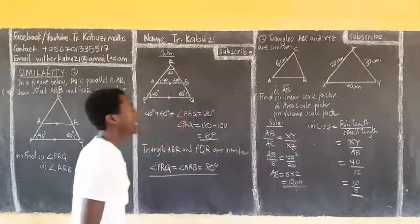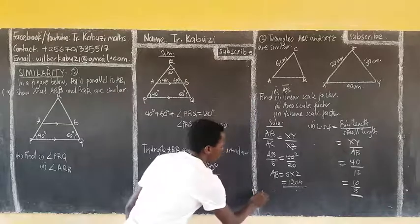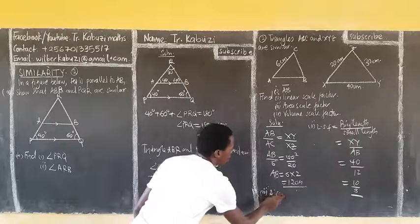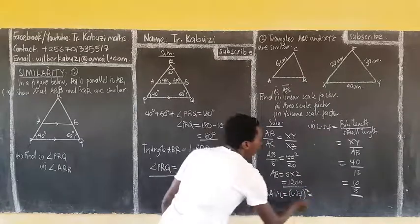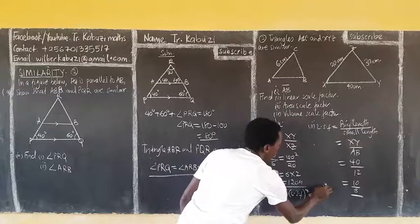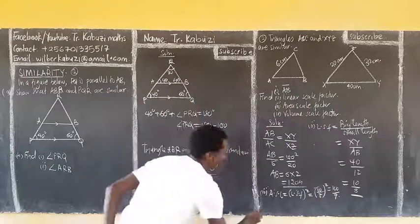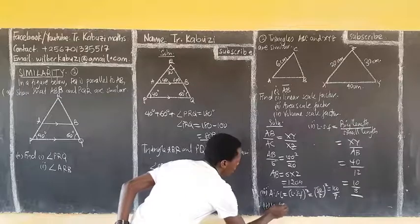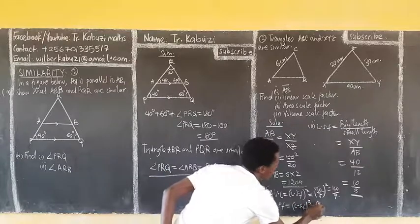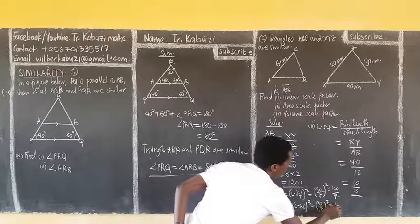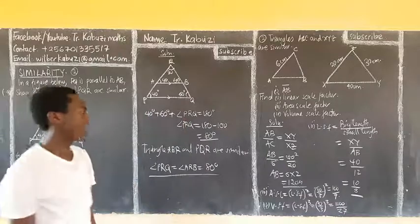Now, if you have the linear scale factor, I think you know that you can get the area scale factor. Then, the number 3 here, you know that, notice, our area scale factor is equal to linear scale factor squared, which will be now, 10 over 3, the whole square, which will be 100 over 9. So, that's how we handle those two things.